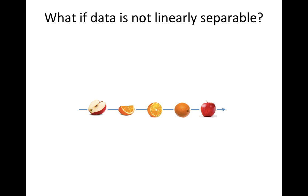What if the data is not linearly separable? Just like this example, having data like this in one-dimensional space, the decision boundary will be just a dot. Since it is one dimension, there is no way to classify apple and orange perfectly.